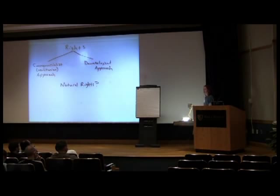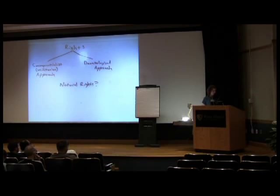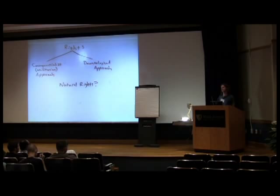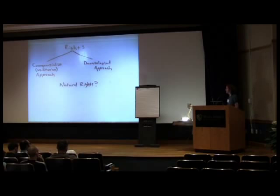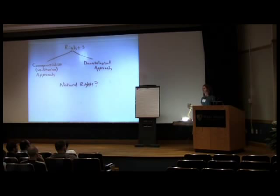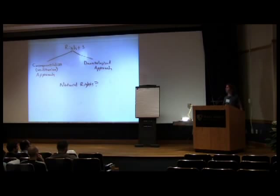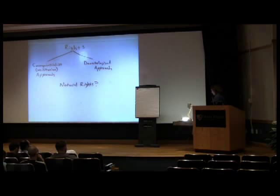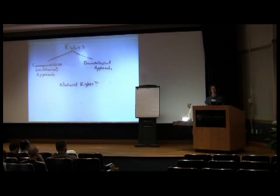I'm going to talk about rights — pretty big topic. I'm going to talk about maybe two main approaches that one can take in sort of justifying rights. But I want to begin by getting myself in a little bit of trouble, because I hear classical liberals and libertarians talking about natural rights a lot. They tend to like natural rights. And I've studied political philosophy for quite a while, several years at least. And I still don't know exactly what the hell natural rights are, really.